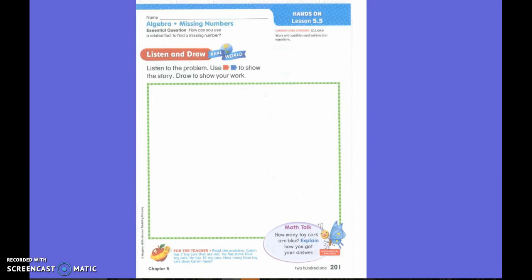Now let's listen to this story to see what we're going to draw. Calvin has seven toy cars that are red. He has some blue toy cars. He has ten toy cars. How many blue toy cars does Calvin have?